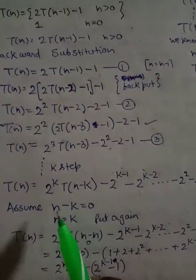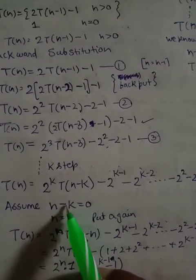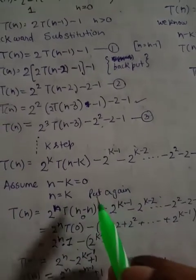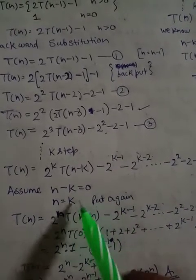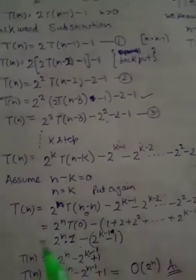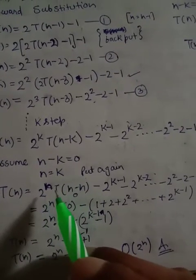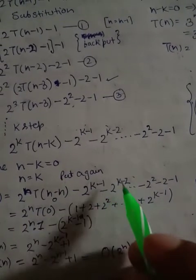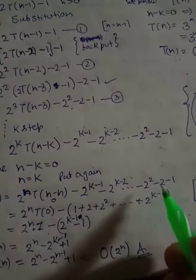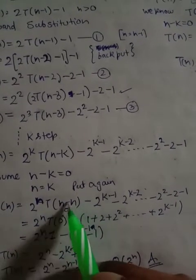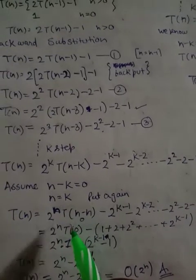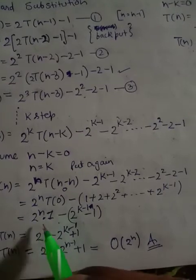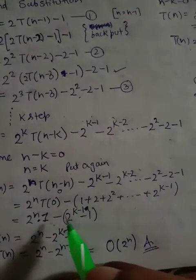We assume n - k = 0, so k = n. Substituting k = n into the equation, we get T(n) = 2^n · T(n-n) - 2^(k-1) - 2^(k-2) - ... - 2 - 1. Since T(0) = 1, this becomes 2^n · 1 minus the remaining terms.